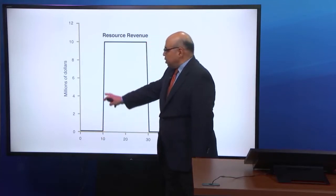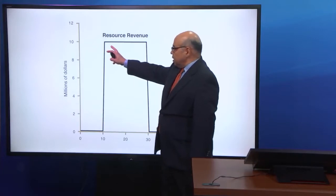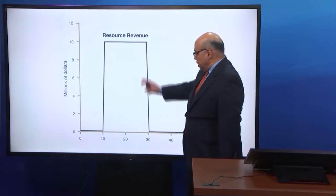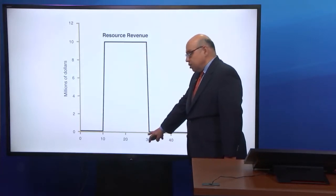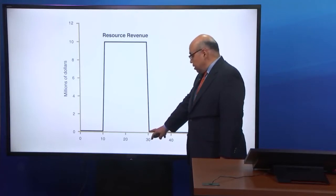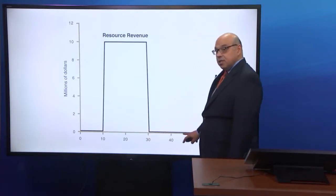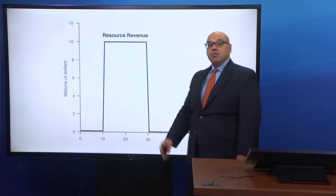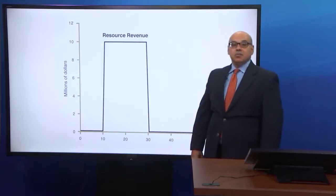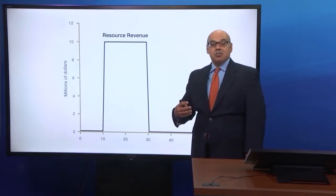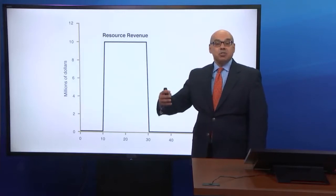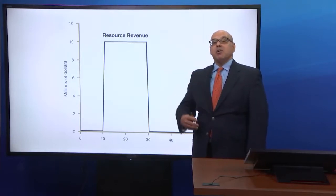Then revenue starts coming in by selling oil, it maintains for a while, and 20 years from today, in year 30, you're going to run out of reserves, and then resource revenue is going to go down to zero. So if that's the profile that government is facing, knowing that it doesn't have resource revenue now, it comes in the future, what would the permanent income hypothesis tell us?